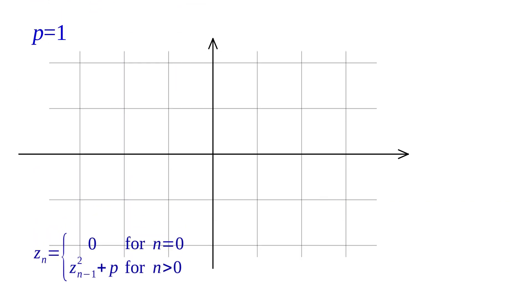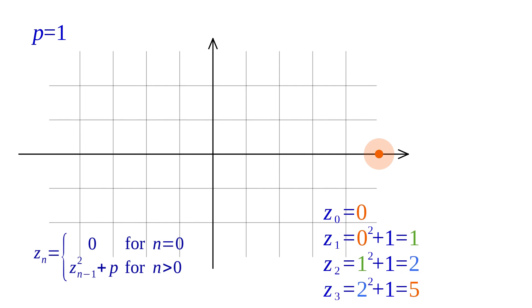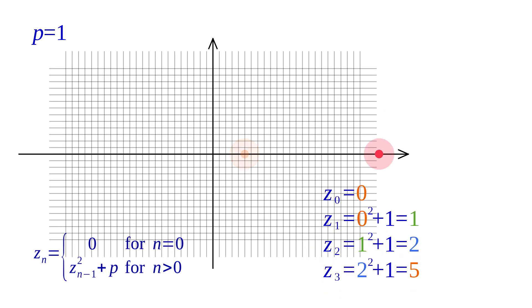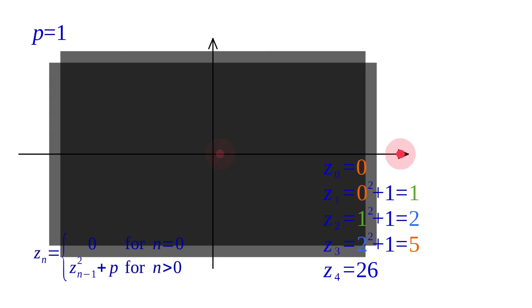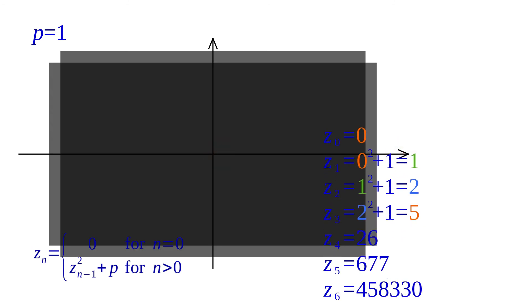For p equal to 1, Z0 equals 0 by definition again. Z1 equals 0 squared plus 1, which is 1. Z2 equals 1 squared plus 1, which is 2. Z3 equals 2 squared plus 1 equals 5. Further terms are 26, 677, 458,330. This sequence tends to infinity.